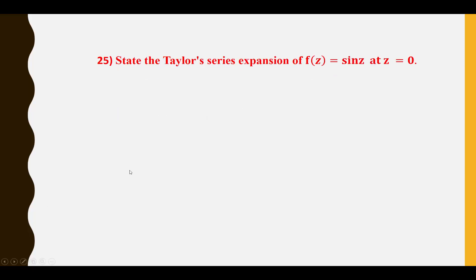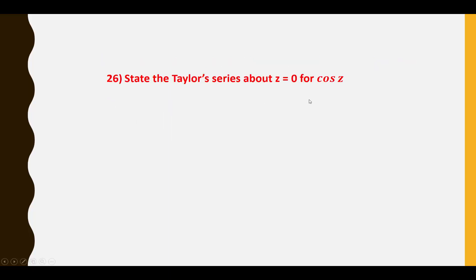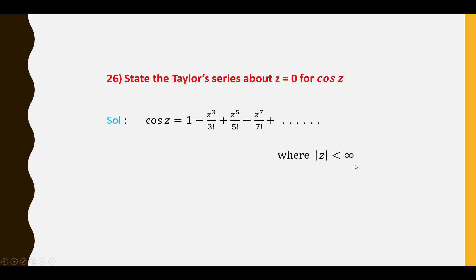Twenty-fifth question: State the Taylor series expansion of sin Z at Z = 0. sin Z = Z − Z³/3! + Z⁵/5! − ··· where |Z| < ∞. Twenty-sixth question: State the Taylor series for cos Z at Z = 0. cos Z = 1 − Z²/2! + Z⁴/4! − Z⁶/6! + ··· where |Z| < ∞.